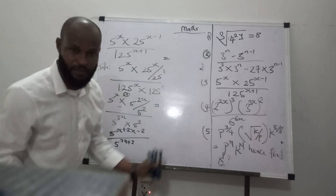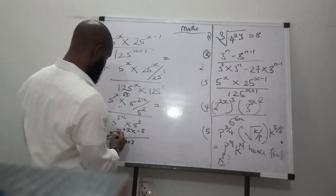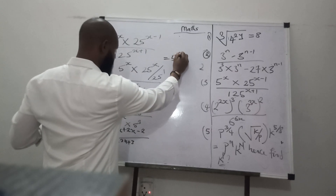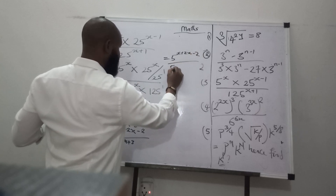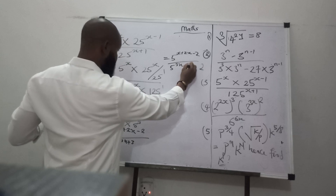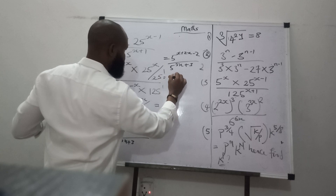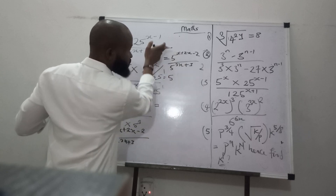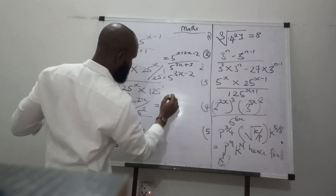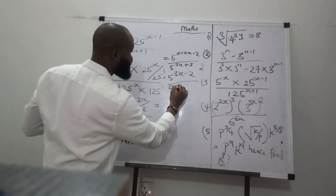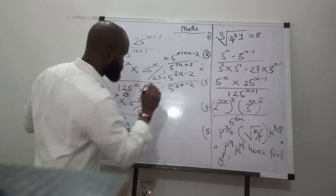If you can understand me, I'm going to use the space right now to get the remaining answers. So we can say 5 raised to the power of x plus 2x minus 2, all over 5 raised to the power of 3x plus 3, will equal 5 raised to the power of 3x minus 2. So 5 over 5 raised to the power of 3x minus 2.